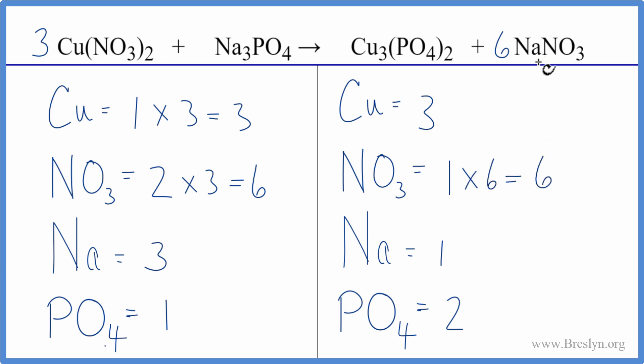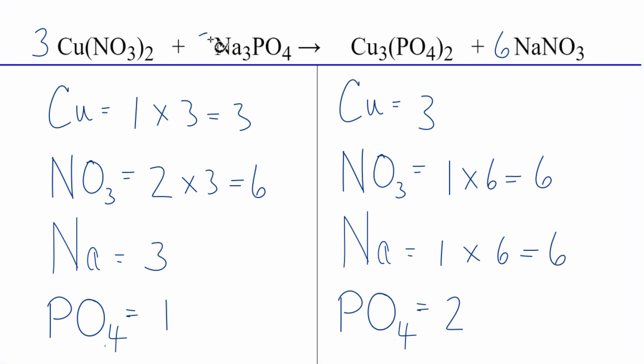And then we have one sodium times the six as well. So we have six sodium atoms. Let's just balance the sodiums. We have six here and three here. We could put a two in front of the sodium phosphate. Three times two, that gives us six. So those are balanced. And the one phosphate times the two, that gives us two phosphates. And that matches up. We're done.